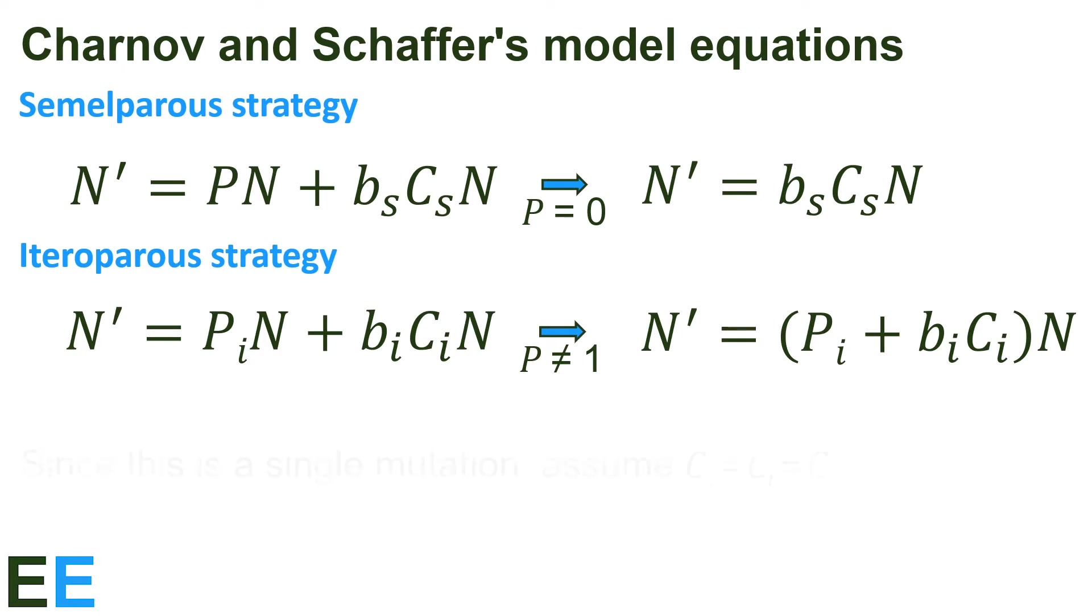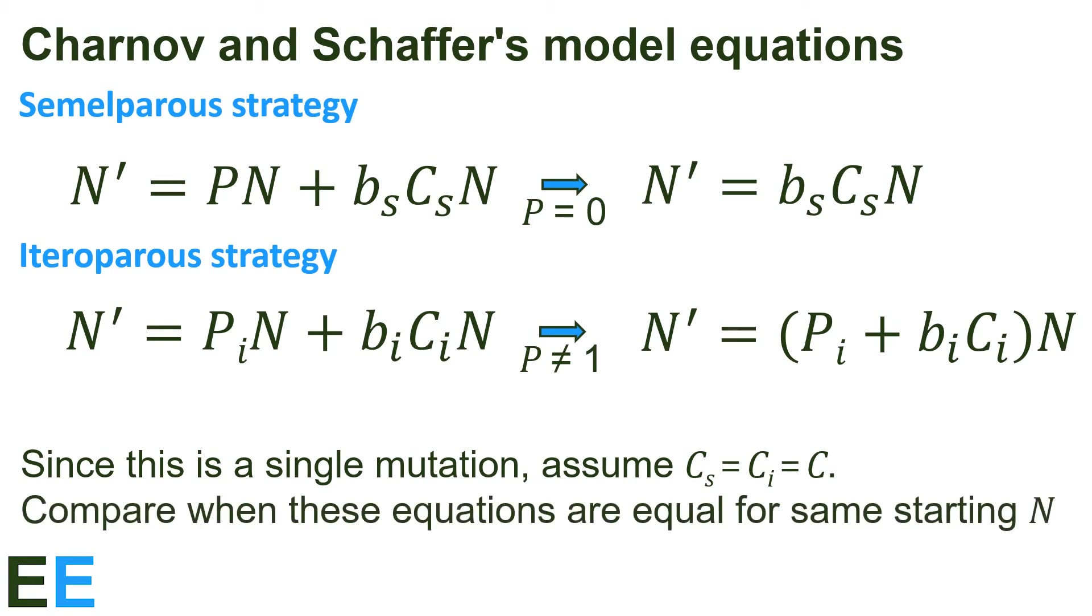To simplify things a little, since this is a single mutation we're thinking about, we'll assume that the juvenile survival probabilities are the same, capital C. Now we'll do the same thing Cole did, compare when these equations are equal for the same starting N.